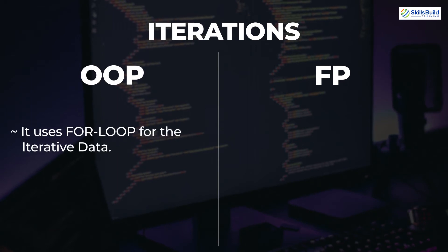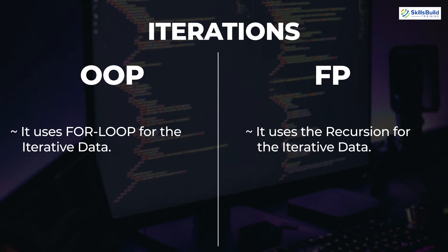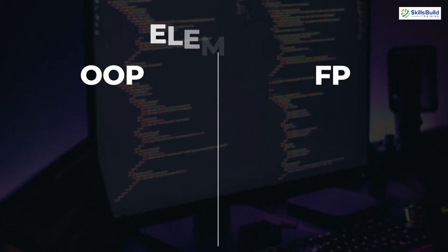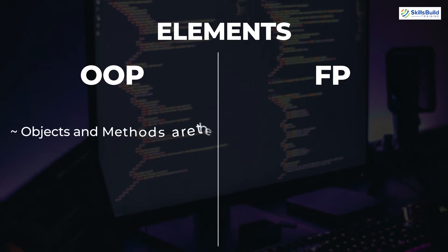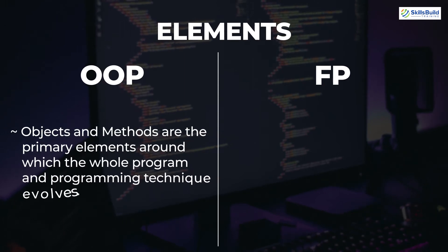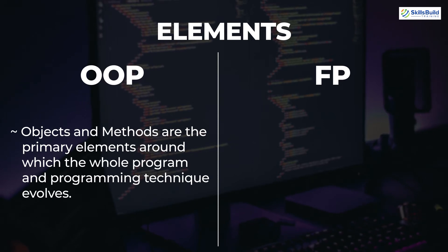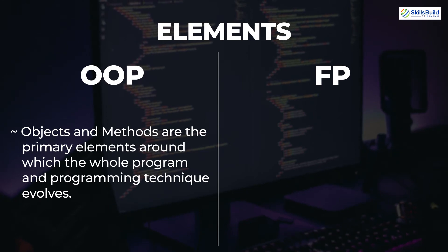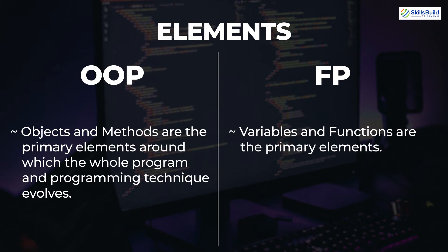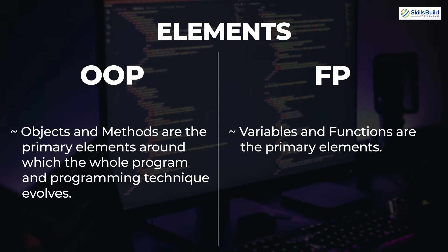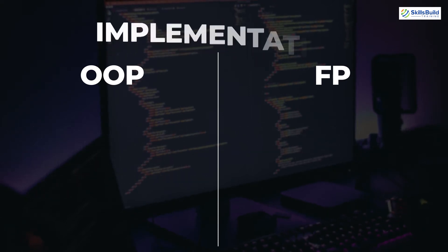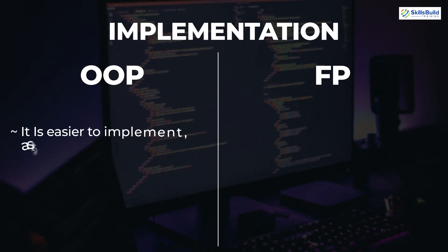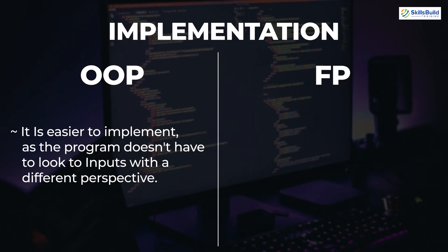In terms of elements, in object oriented programming, objects and methods are the primary elements around which the whole program revolves — we create different methods and objects and our whole program runs with the help of these two. In functional programming, variables and functions are the primary elements — we pass variables or parameters into our functions to get the output. In terms of implementation, object oriented programming is easier to implement as we understand how data works and use it to translate daily life problems into code.